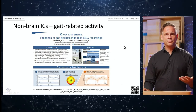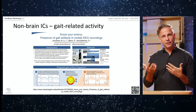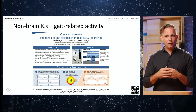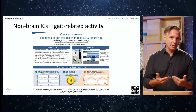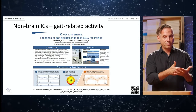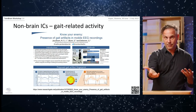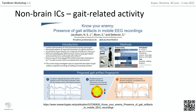Gait-related activity is something we are very interested in for the TwinBrain project — looking at how supra-spinal control processes interact with gait, how gait as a primary task influences cognition, and neural dynamics during secondary tasks like texting while walking. Over the past decade studies on treadmills, natural overground walking, and real-world walking have ramped up, examining how gait impacts neural dynamics and additional cognitive tasks.